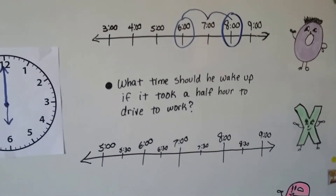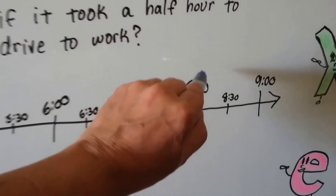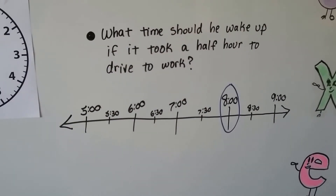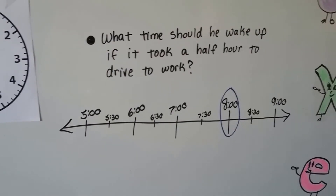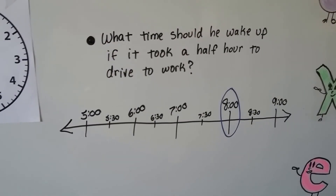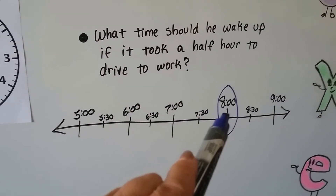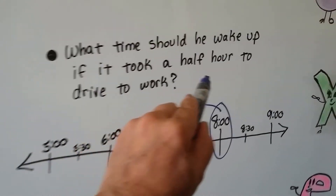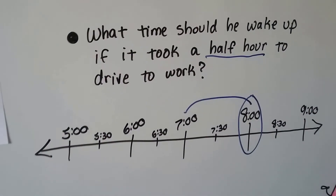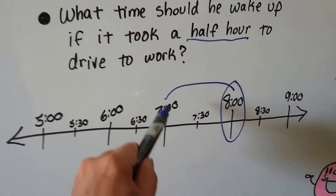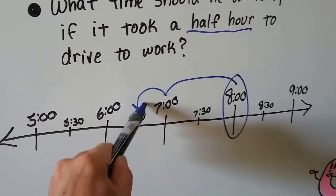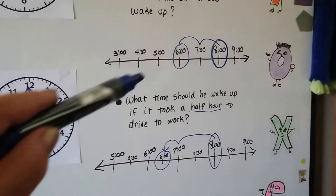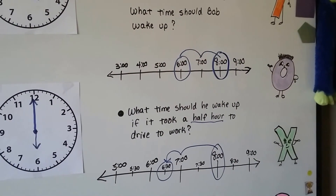What if it only takes a half hour to drive to work? He still needs to be at work at eight and still needs an hour to get ready, so we go back to seven o'clock. But now he only needs a half hour to drive, so we go back to six-thirty. Using a number line split into hours and half hours, we go from seven back to six-thirty. If his drive is a half hour, he can wake up at six-thirty; if it's an hour drive, he needs to wake up at six.